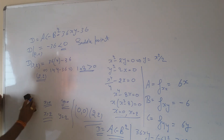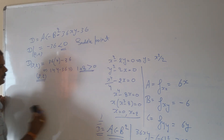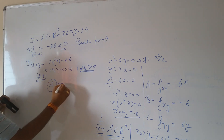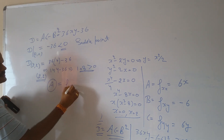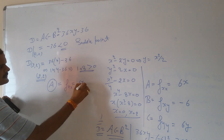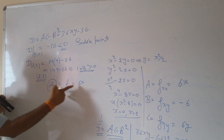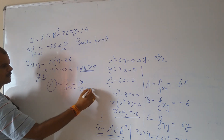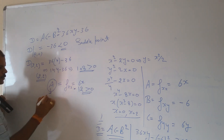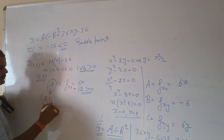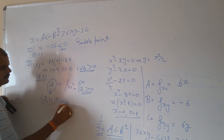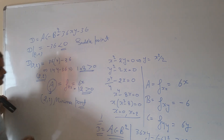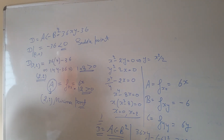Now, is this extrema point a maximum or minimum? Based on the sign of A: A = fxx = 6x, and at x = 2 we get A = 12, which is positive. Since A is positive, the point (2, 2) is a minima point.